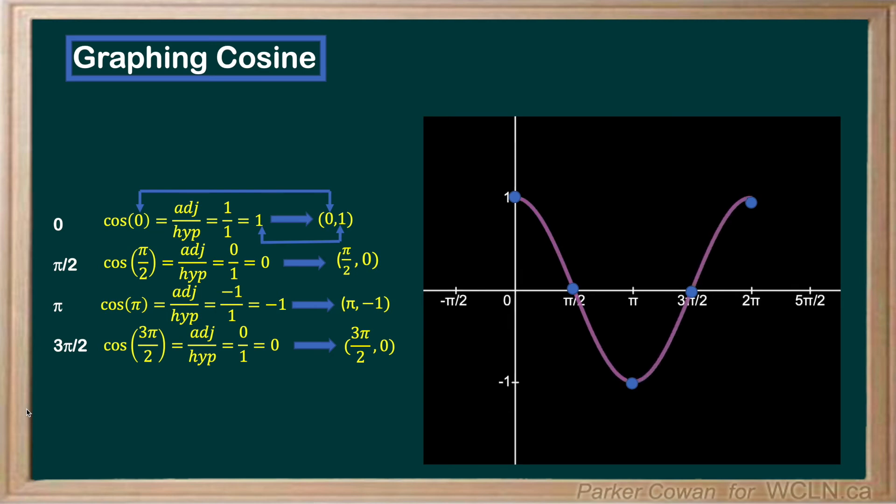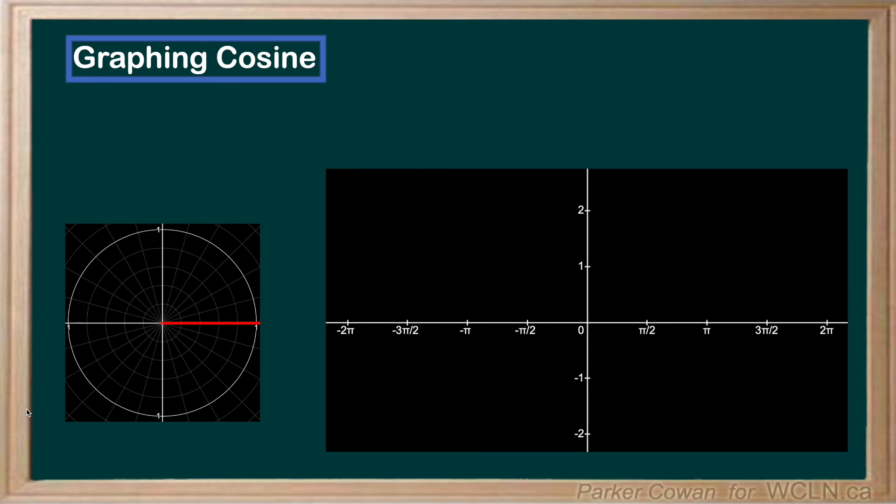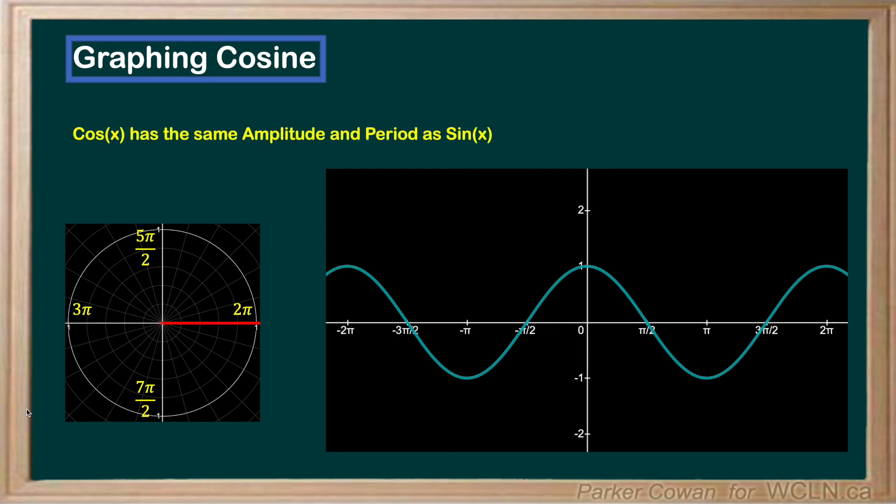However, just like sine, cosine can also be expanded in the positive and negative direction as we continuously rotate around the unit circle. As we can see, cos(x) has the same amplitude and period as sin(x).